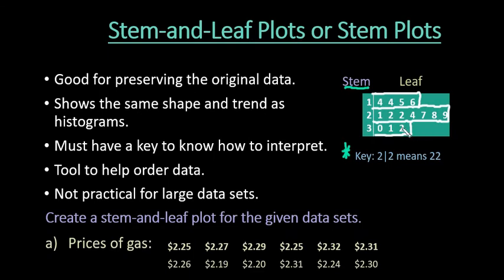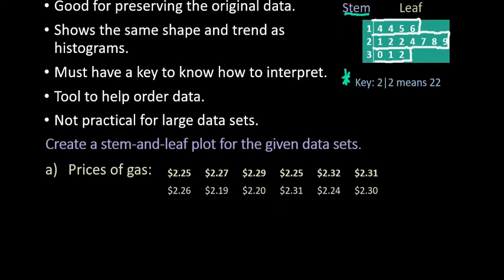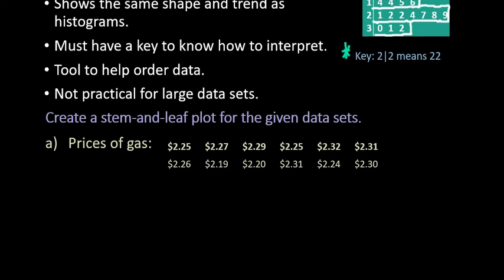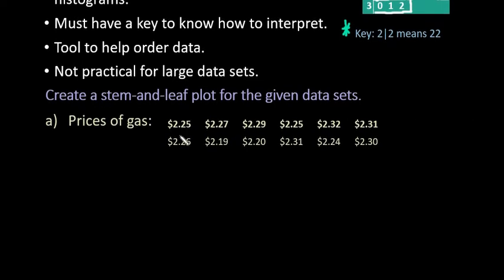The stem-and-leaf plot shows you both, so you can see the overall trend, where the center is, where the most values occur, things like that. It is important to have a key to know how to interpret, because if you don't have the key then it's hard for anybody else to understand what's going on. You can also use this as a tool to help you order your data. If you have a data set that is not in order from smallest to largest and you don't have technology to help you, then you can use this to organize your data set. The disadvantage is it's not practical for large data sets. If you have thousands of data points you really don't want to see all of the individual values, you just want to see the overall trend.